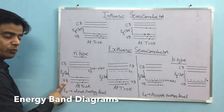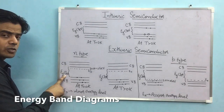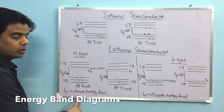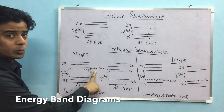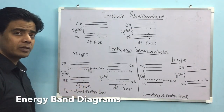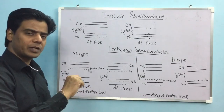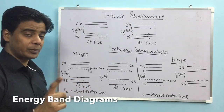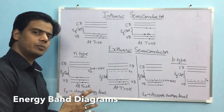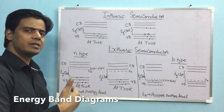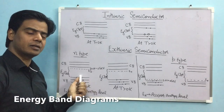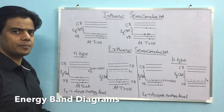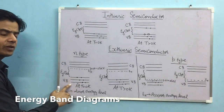For N-type semiconductor energy band diagram: we have the valence band, conduction band, energy band gap, and a new feature — Ed, the donor energy level, which is just below the conduction band. The 5th electron of the pentavalent impurity is not in a bond and requires less energy to become free. In the band diagram, this 5th electron is represented at the donor energy level Ed.